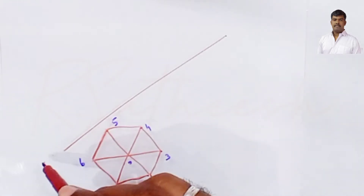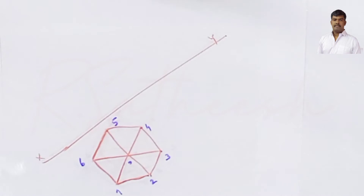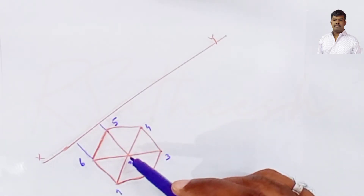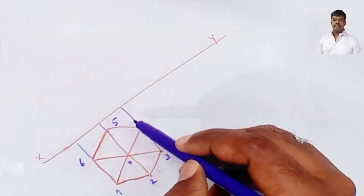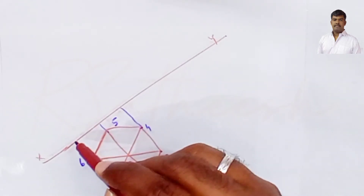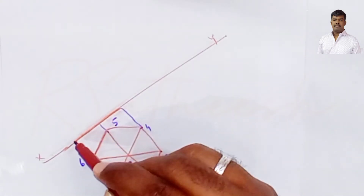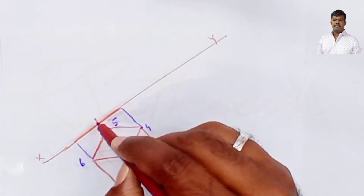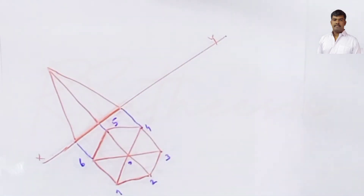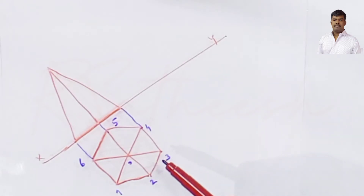This is the XY reference line. Draw the projection lines: 1-comma-6, 2-axis, center O, 5, and 3-comma-4. Before tilting the solid completely, the hexagonal pyramid base is completely resting on HP. This is the height of the pyramid. In the front view, slant edges: number 2-O, and 3-O are visible.